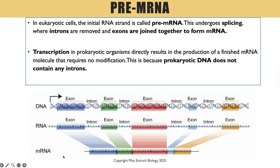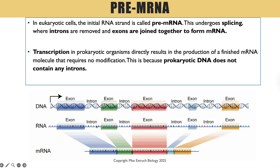When RNA is first made in eukaryotic organisms it's called pre-mRNA, because modifications haven't yet happened. The modification you need to know is that introns are removed by a process called splicing, leaving only the exons behind. We can see our DNA molecule representing one gene — the RNA copy still contains introns, which are sequences of bases that do not code for amino acids. Splicing cuts out the introns, leaving the exons, which are the sequences that do code for amino acids.